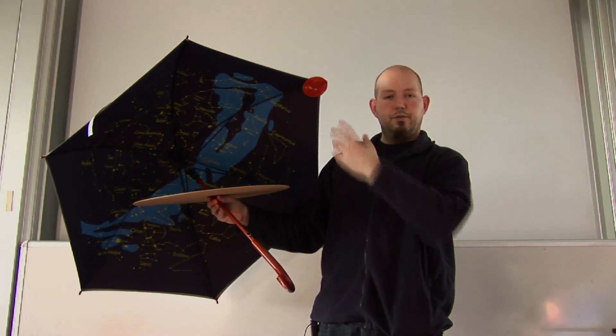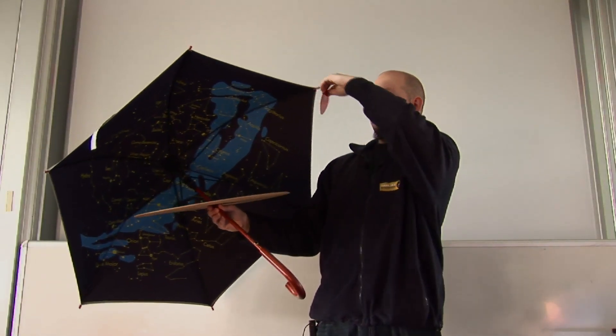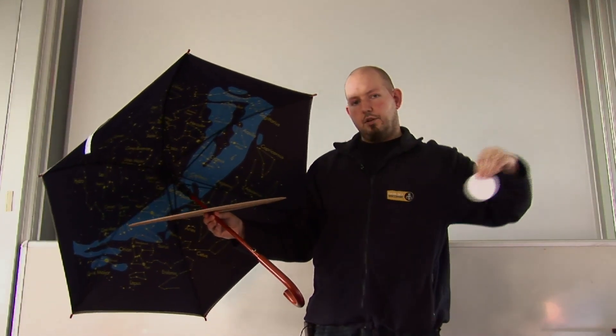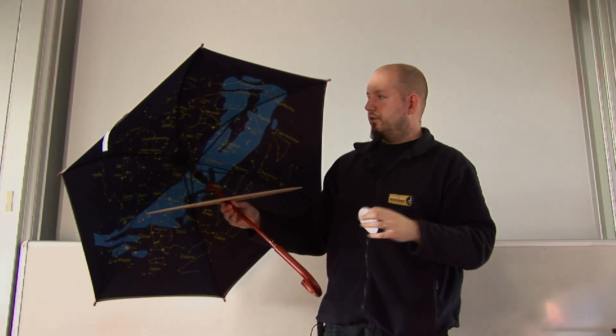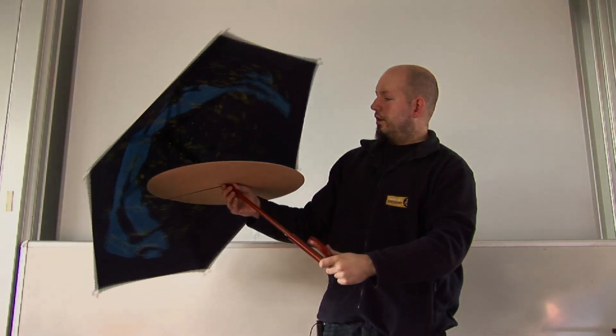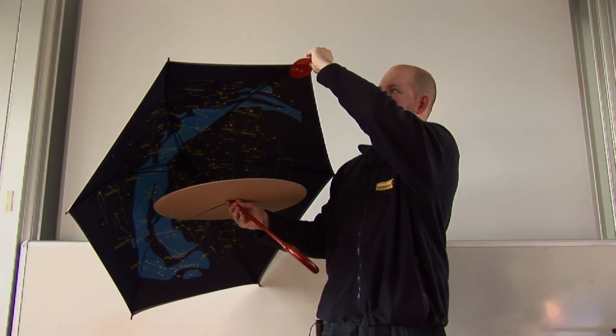But now if we fast forward about six months, the Earth is on the other side of the sun. So it's gone halfway around in its orbit, which means that it appears on the opposite side of the sky.